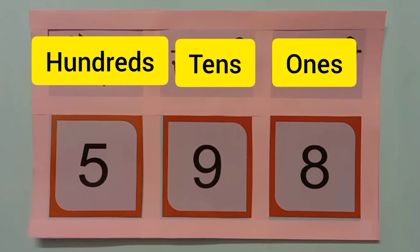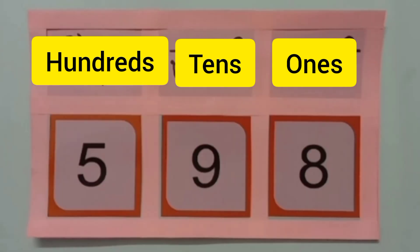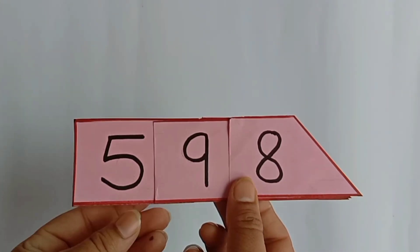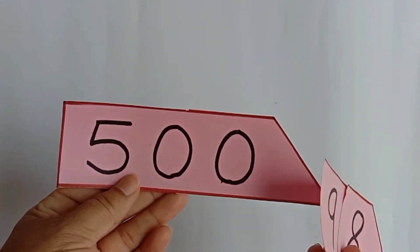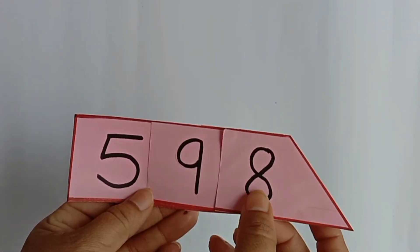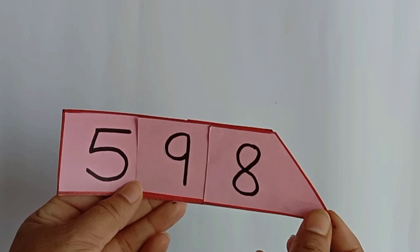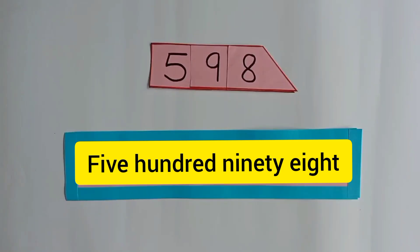Students, from where will we start to read our number? We start from the hundreds place, which means from 500. Let's see this number on the man card. The first man card is 500, then 90, then 8. In the way we read the number, we write the number. So in words, our number is five hundred ninety-eight.